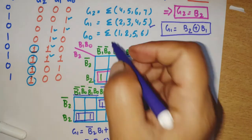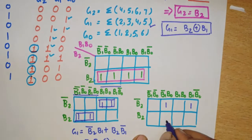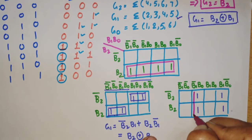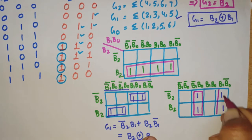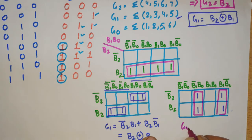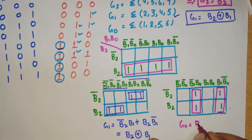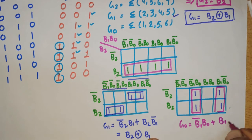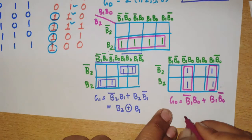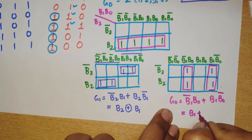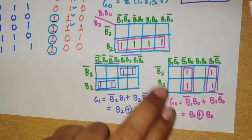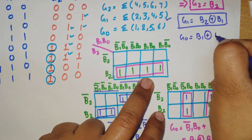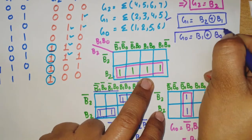For the last K-map, G0, placing minterms 1, 2, 5, 6. Two pairs are possible. The first pair gives B1-bar·B0, and the second pair gives B1·B0-bar. This is again an XOR expression, so G0 equals B1 XOR B0. These are our three final equations: G2 = B2, G1 = B2 XOR B1, G0 = B1 XOR B0.